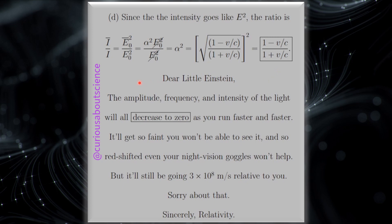But as we can see, if we approach this limit here, we get 1 minus C over C, which is 1 minus 1, which goes to 0. So the intensity would go to 0 in that limit. But for our friend, little Einstein, the amplitude, frequency, and intensity of the light will all decrease to 0 as you run faster and faster. It'll get so faint you won't be able to see it, and so redshifted even your night vision goggles won't help. But it'll still be going at 3 times 10 to the 8 meters per second relative to you. Sorry about that. Sincerely, Relativity.